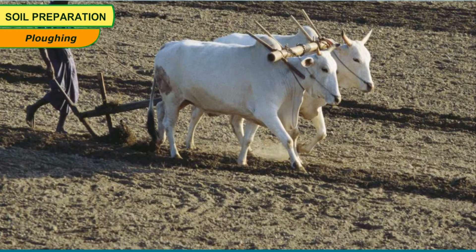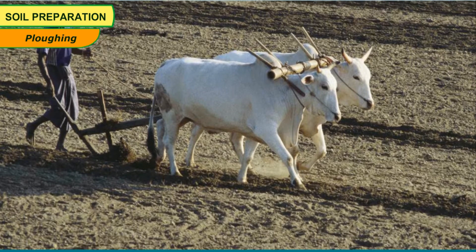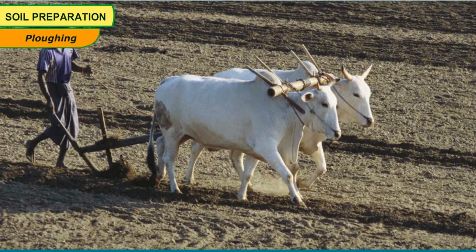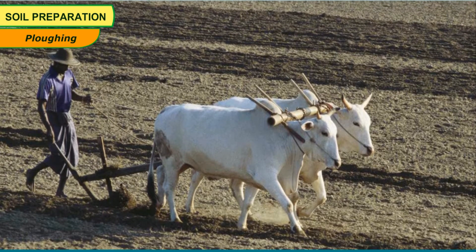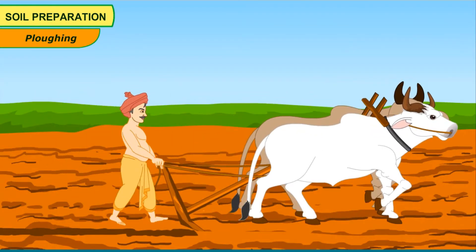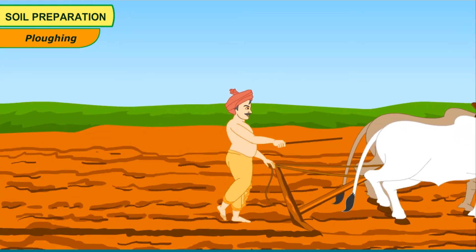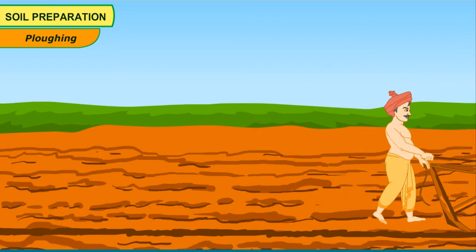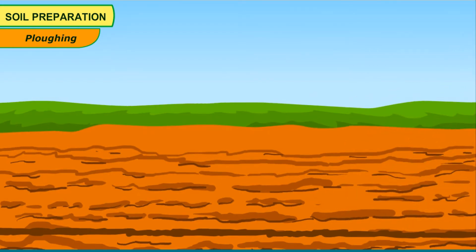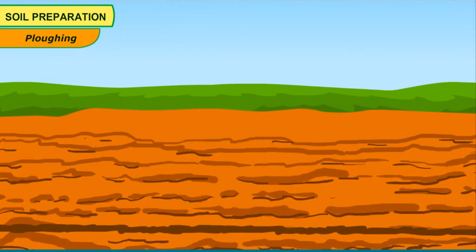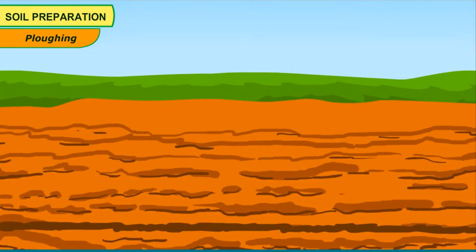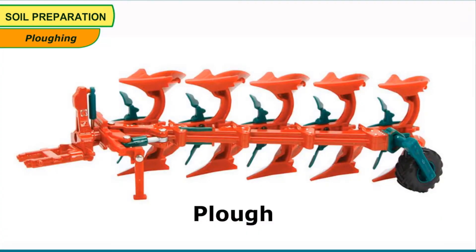Plowing. The process of loosening and turning of the soil is known as tilling or plowing, which can be done by using a plow. Plowing is important because it helps in trapping air in the soil, allows the roots to reach deeper in the soil, helps the soil in retaining moisture for longer duration, helps in mixing the nutrient-rich soil with the topsoil, and helps in removing unwanted plants known as weeds. The plow and other tools used for large-scale production of crops are known as agricultural implements.